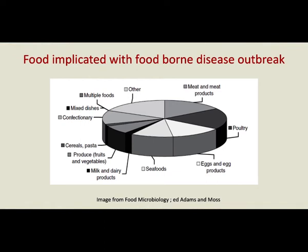If you look worldwide at which types of food are implicated with food-borne diseases, you see that almost all categories of food are involved. Basically, most of the proportion would be meat and meat products, poultry, egg and egg products, and seafoods. These carry the bulk of the causative organisms which cause food-borne disorders.